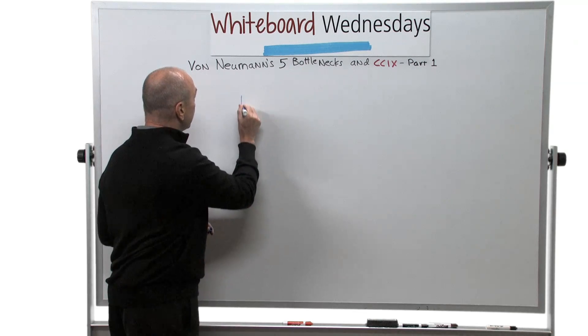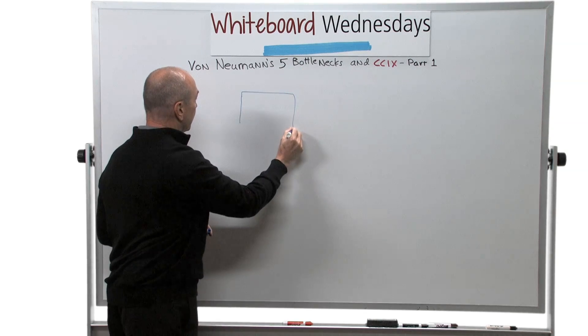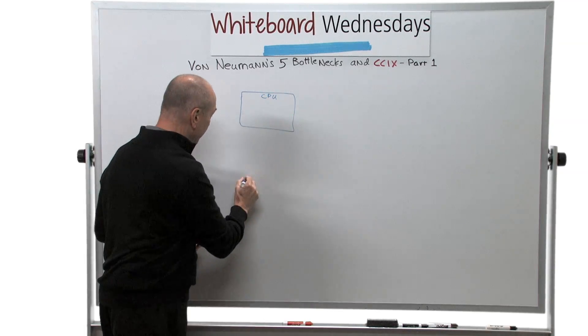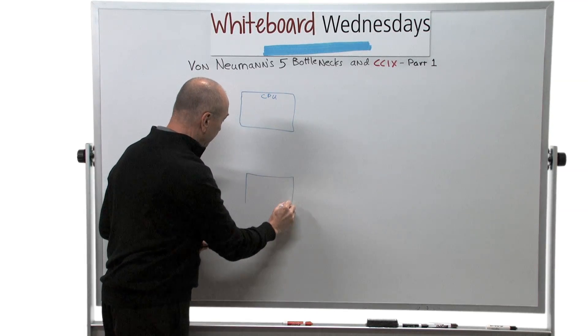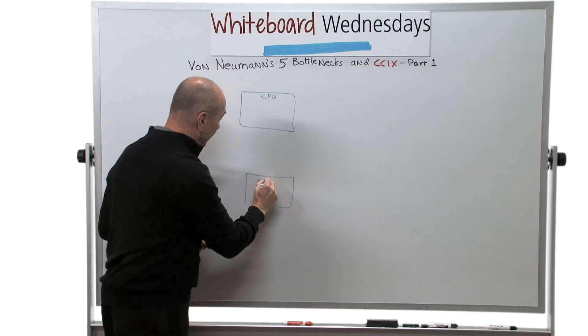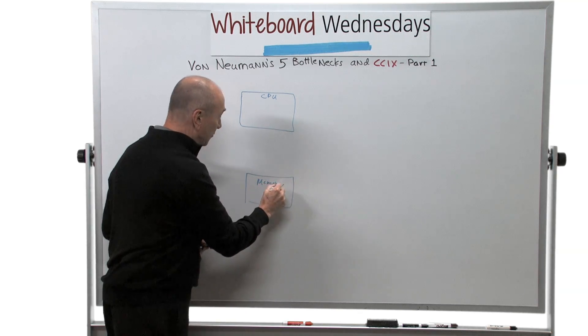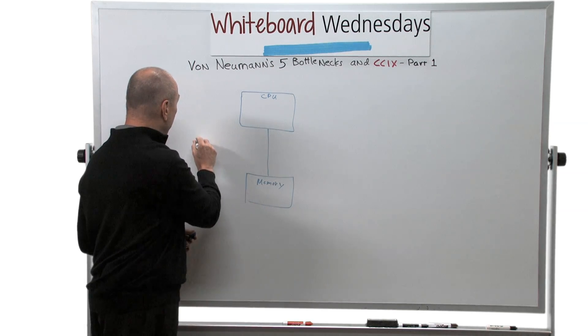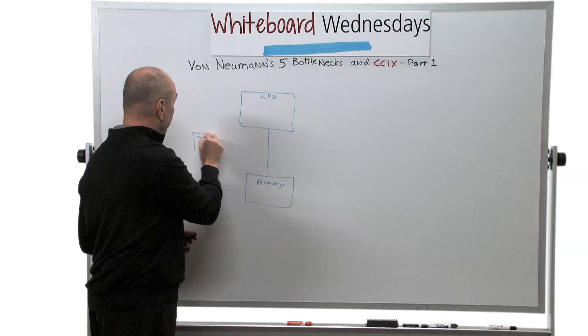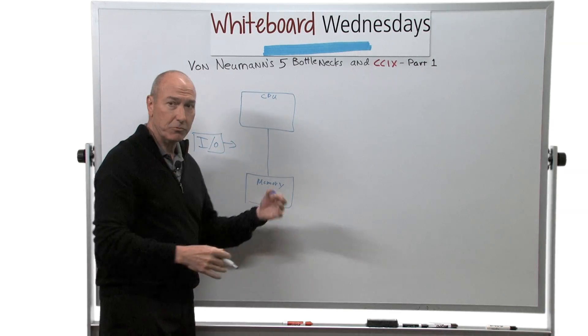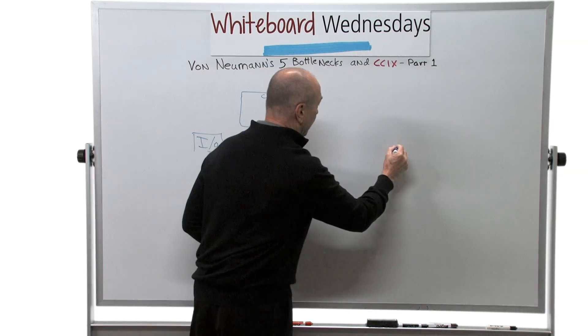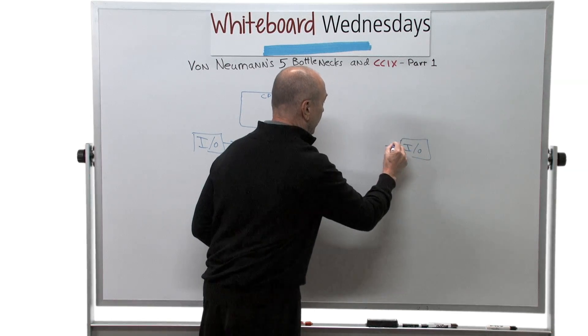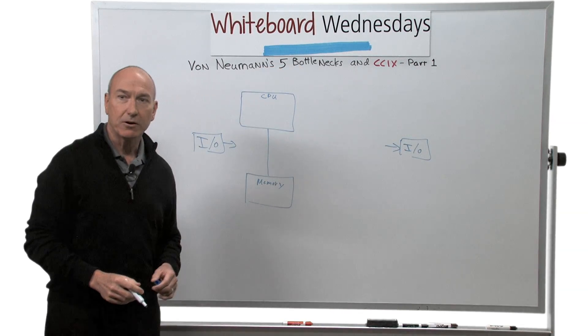You have a processing element, and we'll call it the CPU, connected to memory. And in that memory, we're going to store our program code and our data. We'll feed the computing system through an I.O. device, and we're going to produce output, and that'll go out through another I.O. device. So this is the von Neumann architecture.